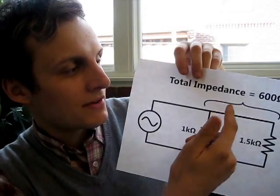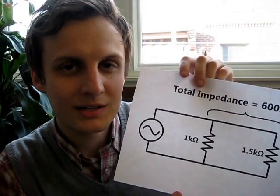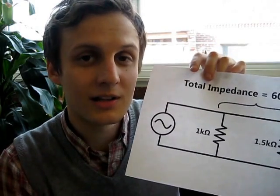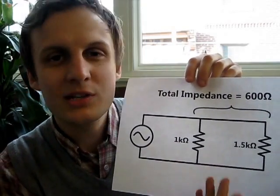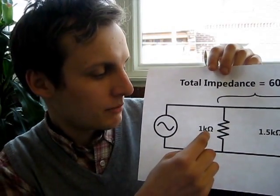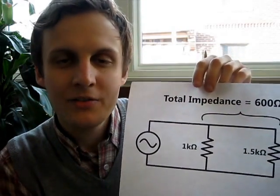If we know the mic preamp's impedance and the impedance we desire, it's a simple formula to calculate what we need to put in parallel. For example, with 600 ohms as the desired input impedance — the old standard featured on a lot of vintage audio gear — and our modern standard of 1.5K, we need a 1K resistor in parallel. We could just put a resistor in a cable and be done with it for this exact situation.